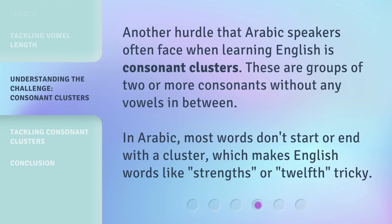Another hurdle that Arabic speakers often face when learning English is consonant clusters. These are groups of two or more consonants without any vowels in between. In Arabic, most words don't start or end with a cluster, which makes English words like 'strengths' or 'twelfth' tricky.